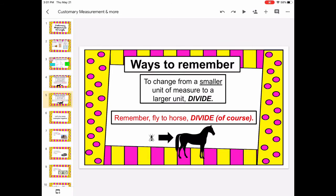And as you can probably guess, when you go from a smaller unit to a larger unit you divide. So you go from smaller fly to horse, divide of course.